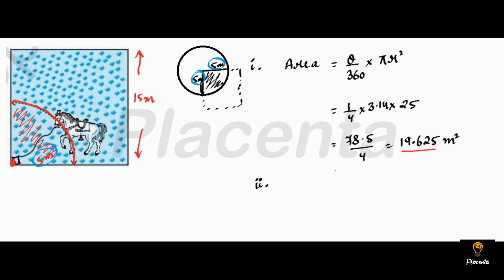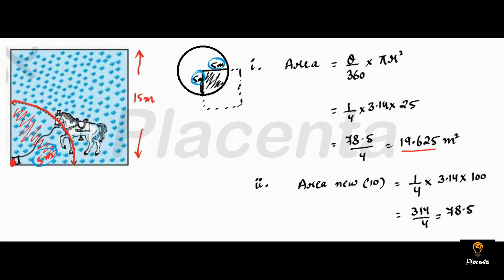The new area will be calculated with the rope length of 10 meters, so radius = 10. Theta remains the same: 90°, so 90/360 = 1/4. Multiplied by π = 3.14, multiplied by r² = 10² = 100. So we get 314 / 4 = 78.5 square meters. This is our new area.